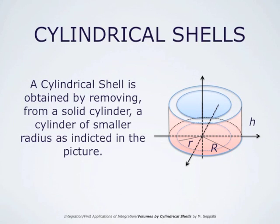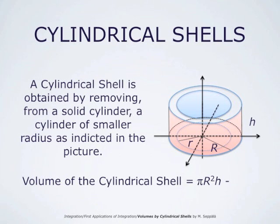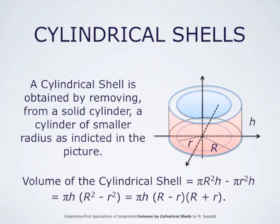A cylindrical shell is obtained by removing from a solid cylinder a cylinder of smaller radius, as indicated in this picture. These two cylinders have the same central axis. If the radius of the larger cylinder is capital R and that of the smaller one is small r, then the volume of the larger cylinder is pi times R squared times h, and that of the smaller one is pi times r squared times h. The volume of the cylindrical shell is the difference of these two volumes: pi times h times R squared minus r squared, which can be written as pi times h times (R minus r) times (R plus r).